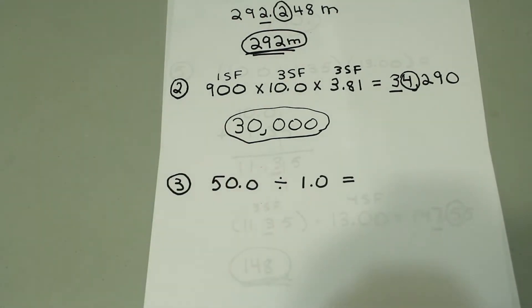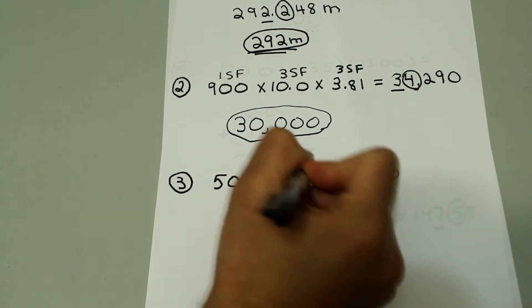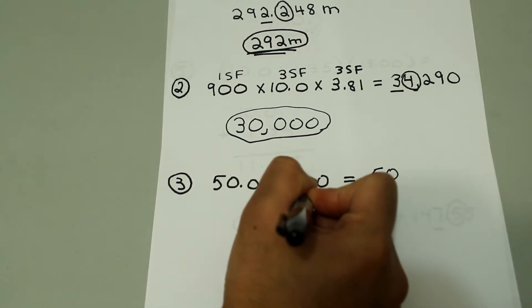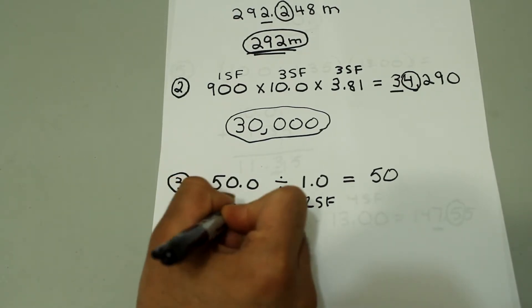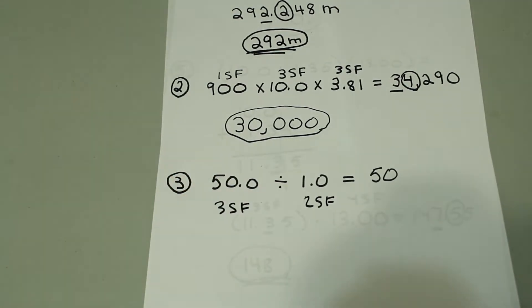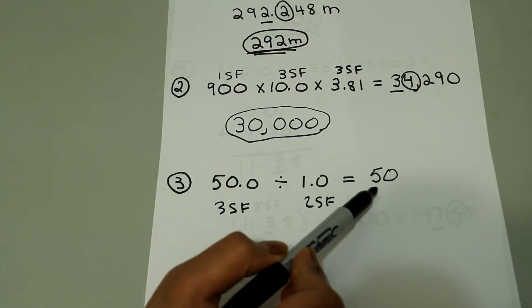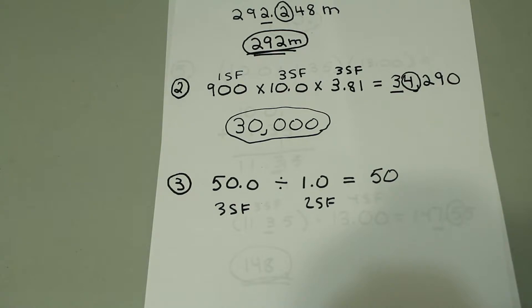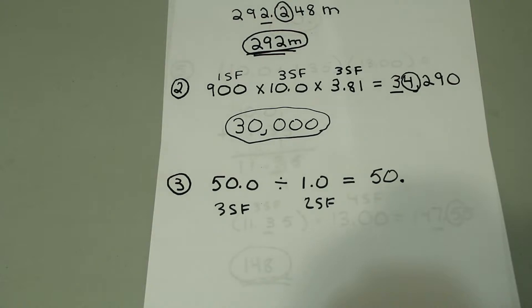Next we have 50.0 divided by 1.0. The answer for that would be 50. Since 1.0 has two significant figures and 50.0 has three significant figures, the final answer should have two significant figures. But if we write 50 like this, that only has one significant figure. If we put a decimal point, now it has two significant figures — so the answer is 50.